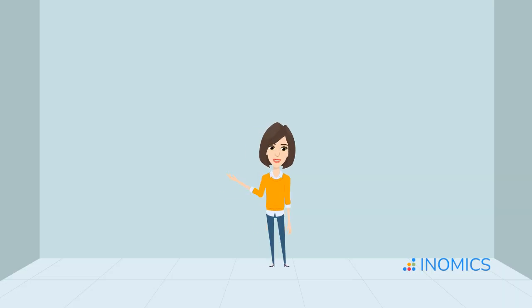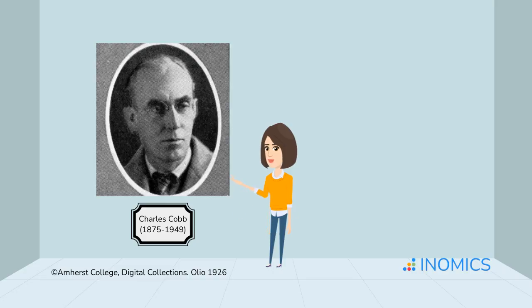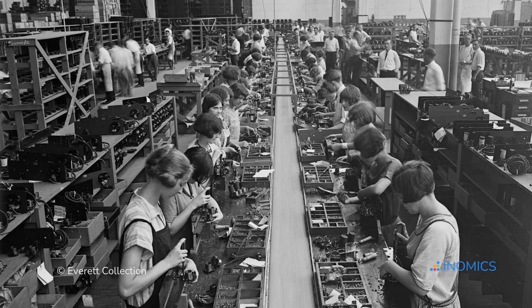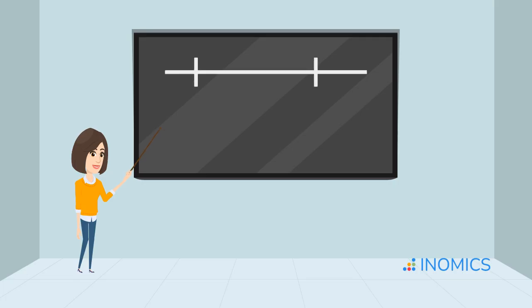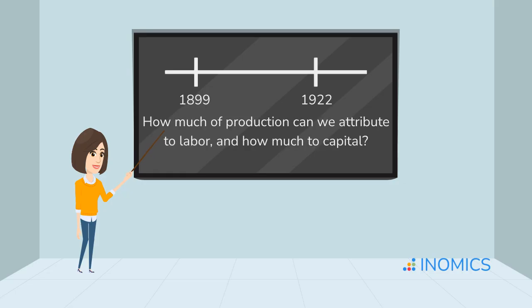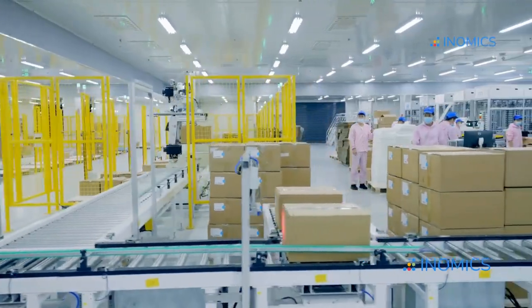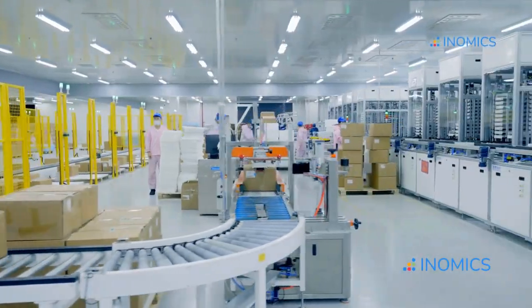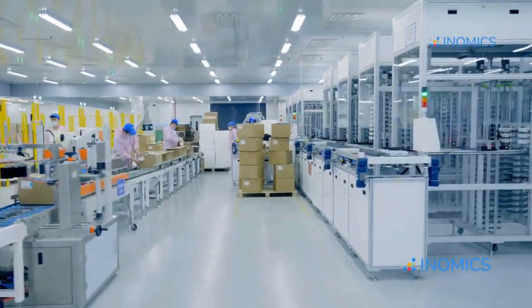The story begins in the early 20th century with two people: Charles Cobb, a mathematician, and Paul Douglas, an economist. In the 1920s, they teamed up to study how labor and capital contributed to US manufacturing output between 1899 and 1922. They wanted to answer a simple but profound question: how much of production can we attribute to labor, and how much to capital? Their work led to a functional form that captured the relationship between inputs and output remarkably well, and that form became known as the Cobb-Douglas production function.